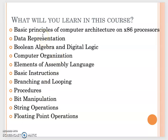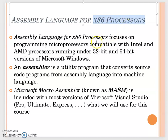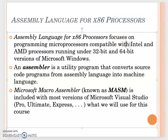Now let's talk about what assembly language really is. Assembly language is a type of programming language, and there are different assembly languages. In this class we will focus on the x86 processor, specifically programming microprocessors compatible with Intel or AMD processors. When you buy a CPU, you'll see it's either Intel or AMD.